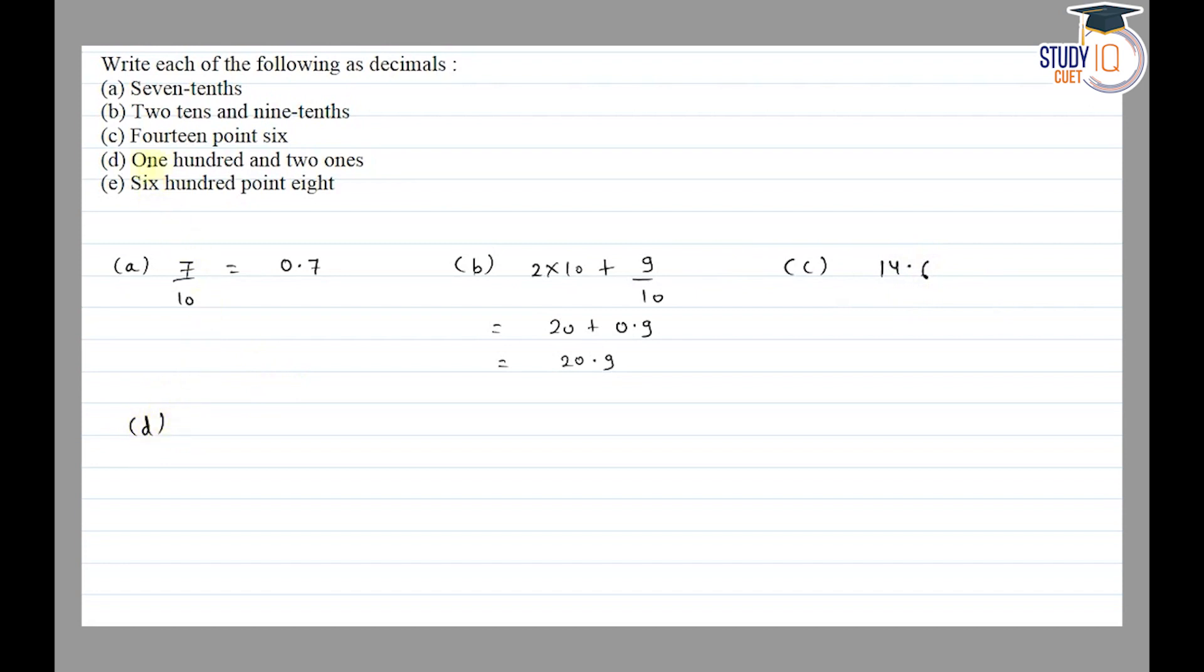Part (d): 100 and 2 ones. So here, 100 means 100, plus 2 ones means 2 into 1, equals 100 plus 2, equals 102. And part (e) is 600.8. Thank you.